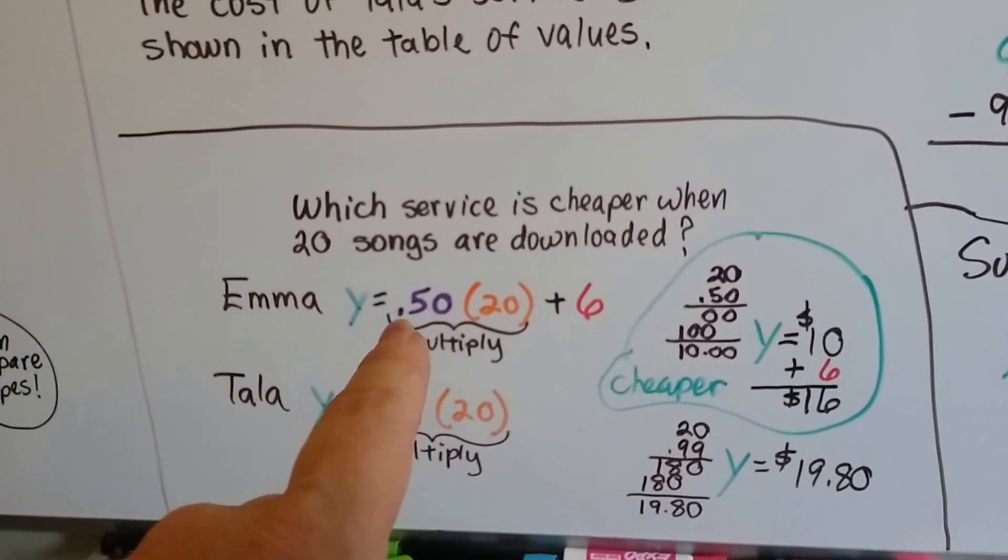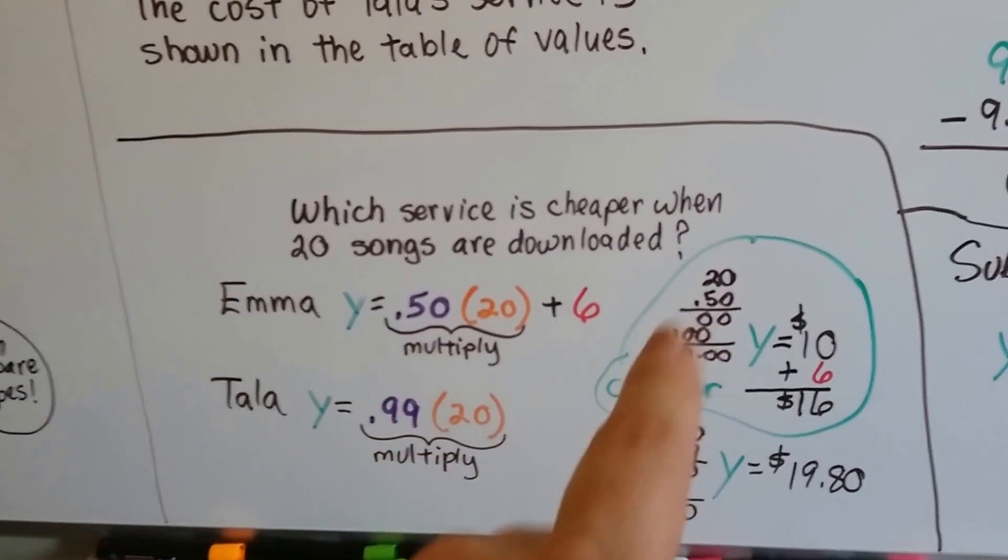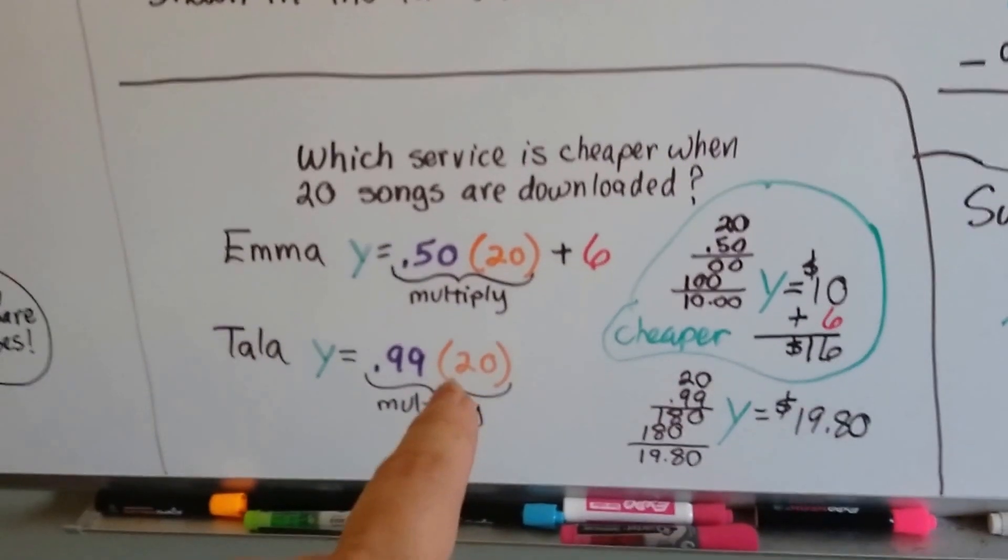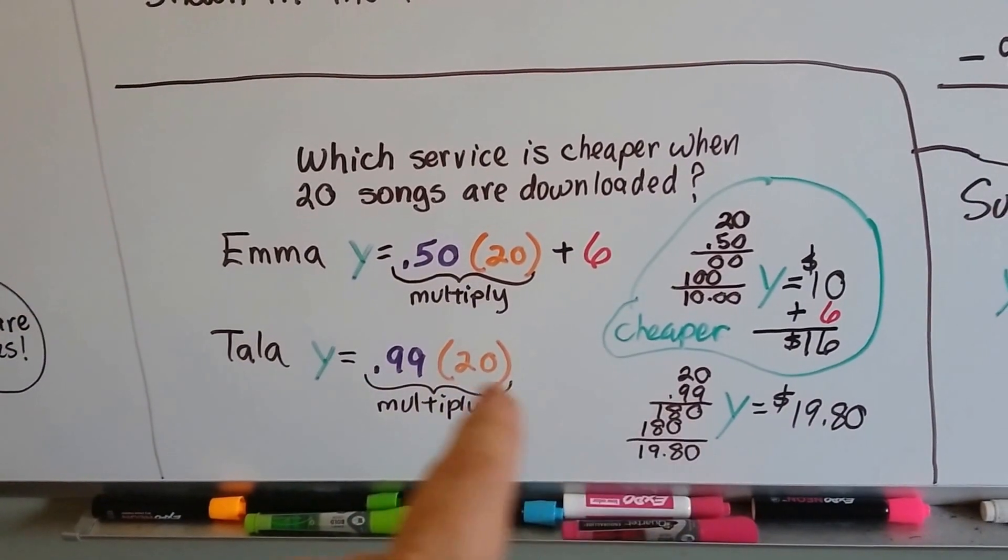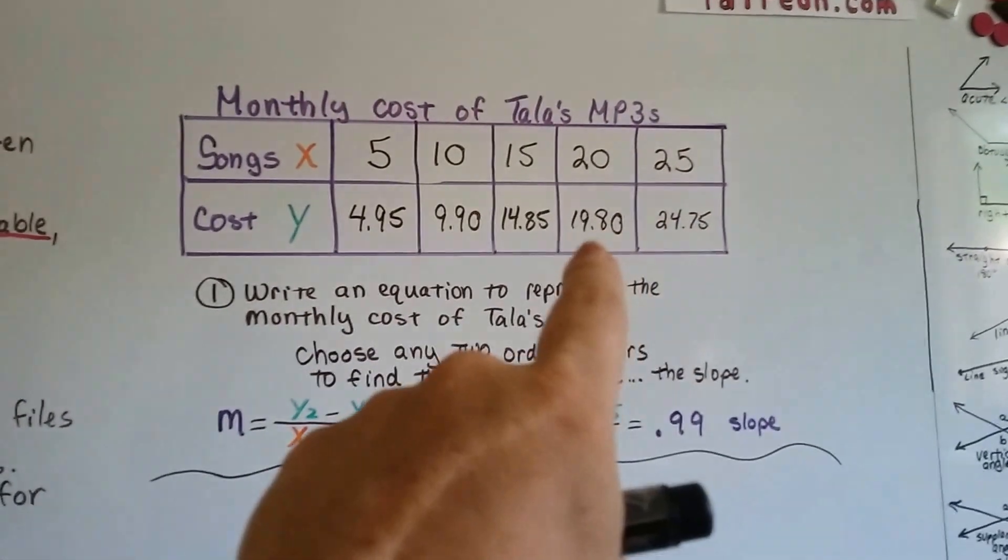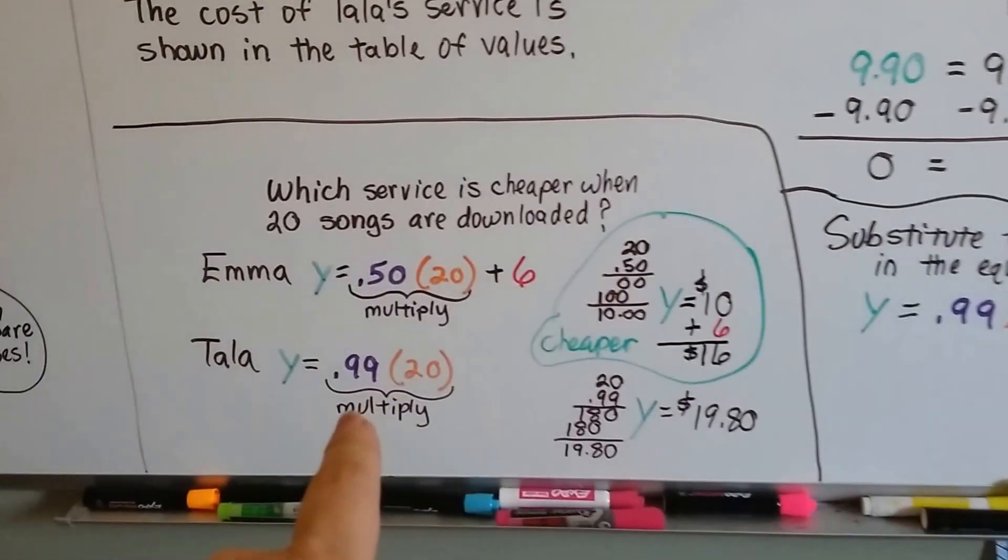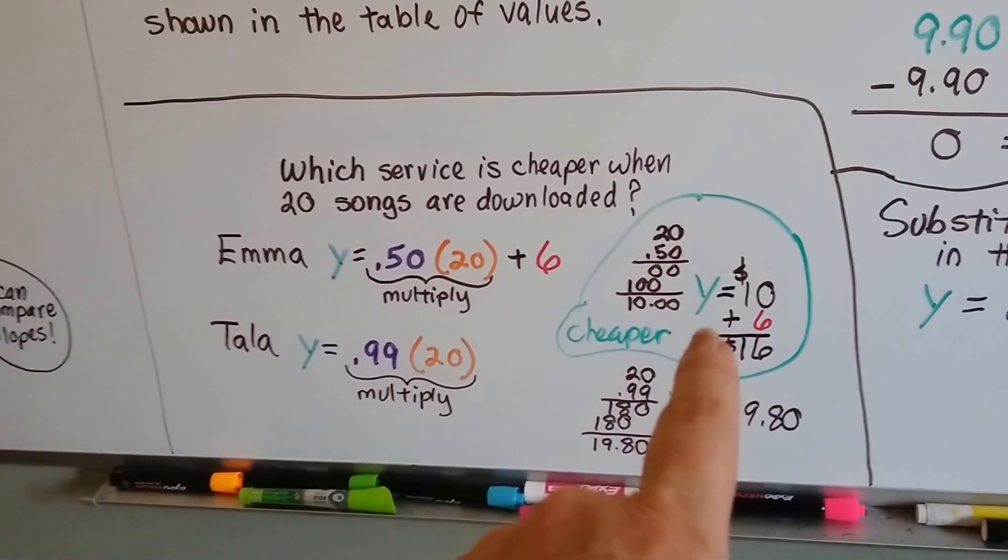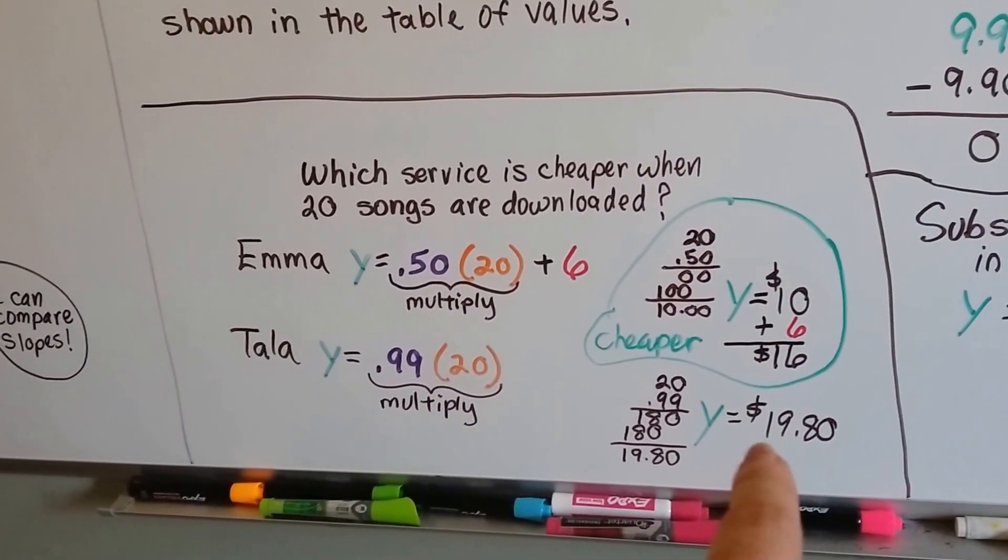For Emma's, the .50 times 20 is $10. We add the $6, and that's 16. We multiply the .99 times 20, and we get 19.80. That's what it said in the table of values, too, that 20 was 19.80. We can see which one is cheaper. Emma's is cheaper. Hers is only $16. That's $3.80 cheaper.